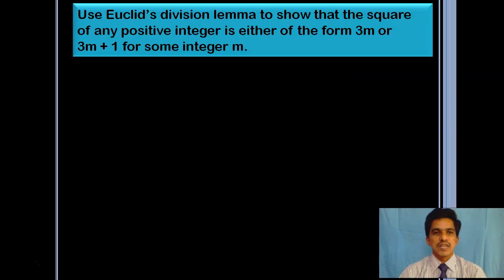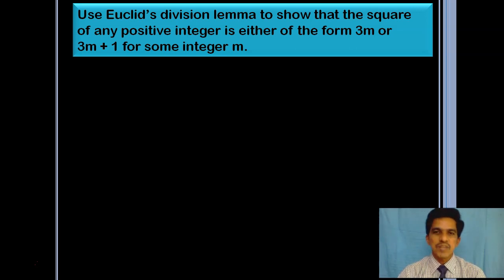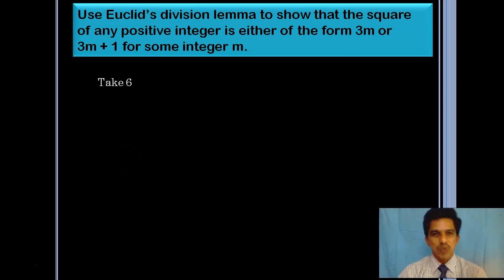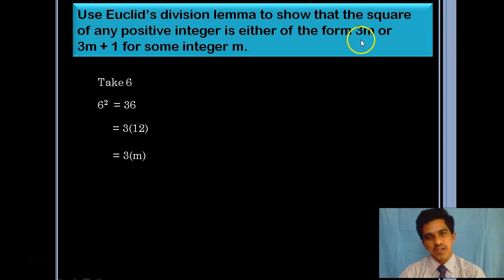We will take one more problem. Use Euclid's division lemma to show that the square of any positive integer is either of the form 3m or 3m plus 1, where m is some integer. We need to prove that when you square a positive integer and divide by 3, the square is of the form 3m or 3m plus 1. For example, take 6 squared which is 36. 36 is 3 times 12, so it is of the form 3m.